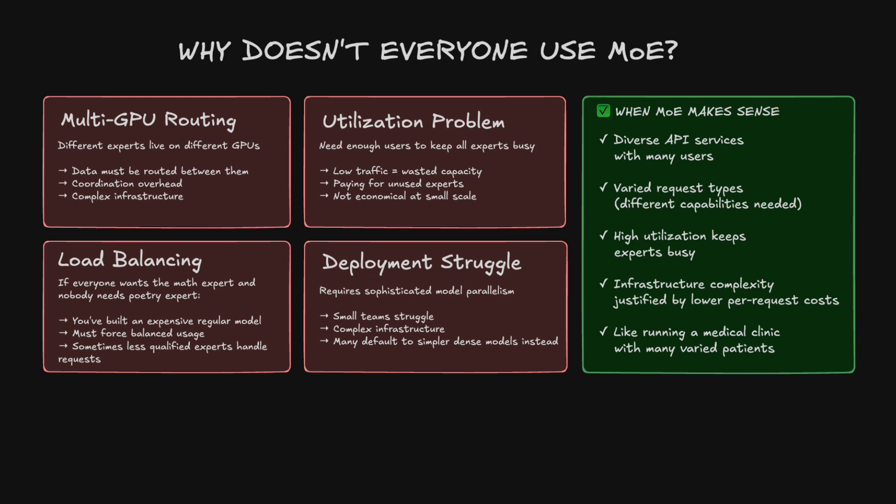You also need enough simultaneous users to keep all the experts busy; otherwise, you're paying for unused capacity. There is also a load balancing problem — if everyone wants the math expert and nobody needs the poetry expert, you've essentially built an expensive regular model. The architecture includes mechanisms to force balanced usage, but this can mean sending questions to less qualified experts just to spread the load. Running Mixture of Experts requires sophisticated model parallelism across multiple GPUs, and small teams often struggle with deployment, which is why many default to smaller, dense models despite Mixture of Experts being more efficient at scale.